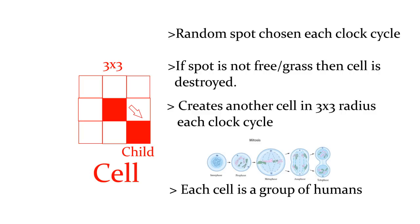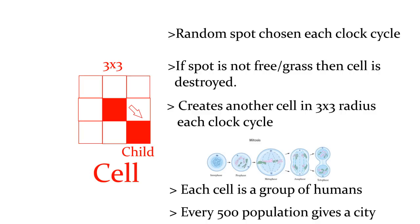Also, for every 500 population a faction gets, a city will be built in a random location. This shows which factions are doing the best. If a different faction takes that city, then it will change colour.